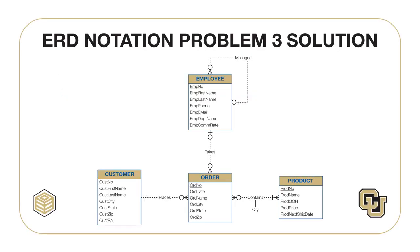This diagram shows the solution for Problem 3. Most of the solution follows directly from the problem narrative, including the Contains many-to-many relationship with the QTY (quantity) attribute. The specification that an order is optional to a product is shown by the minimum cardinality symbol of a circle near the Order entity type in the Contains relationship. Likewise, the specification that a product is mandatory to an order is shown by the perpendicular cardinality symbol near the Product entity type in the Contains relationship.